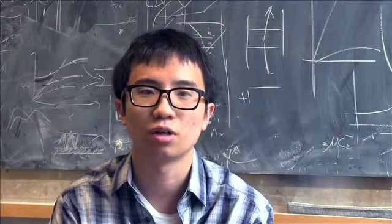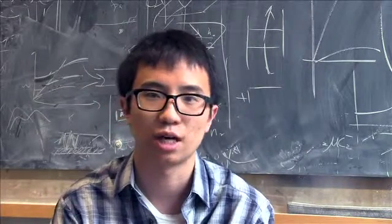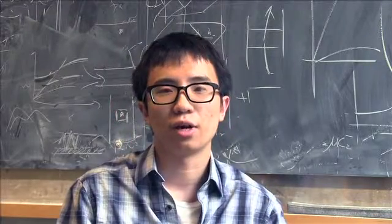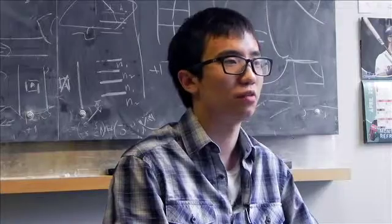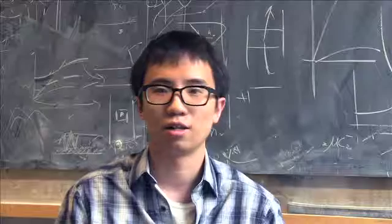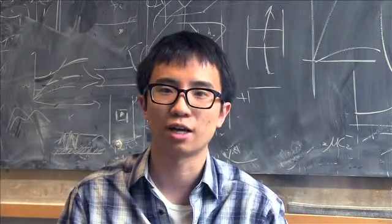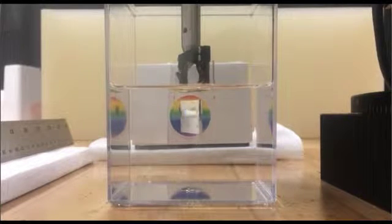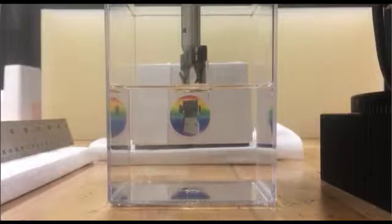The key idea we used in our device was the Brewster angle. When light shines on the interface of two different materials, there is a magic angle called the Brewster angle. When light comes in exactly at that Brewster angle, there will be no reflection at the interface.